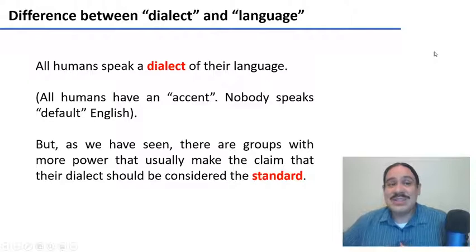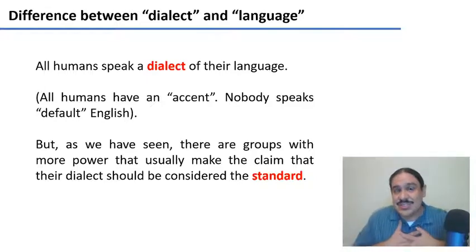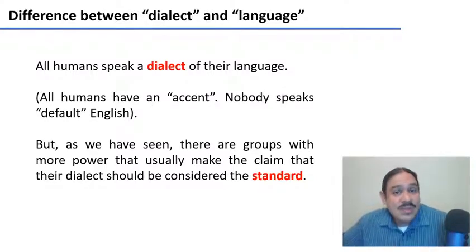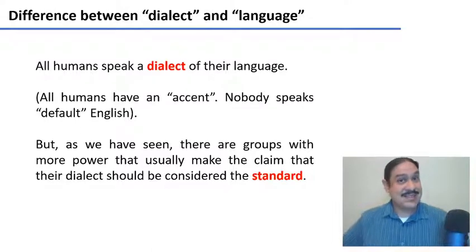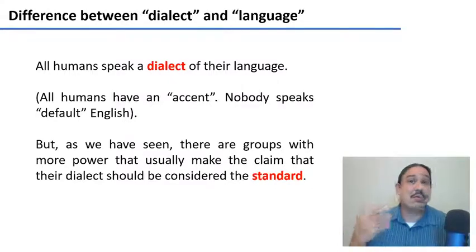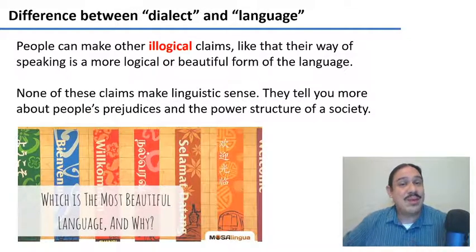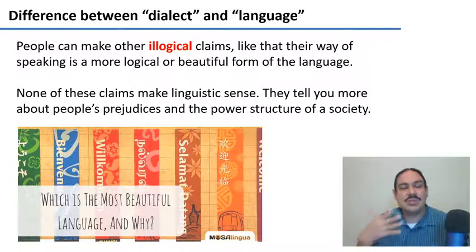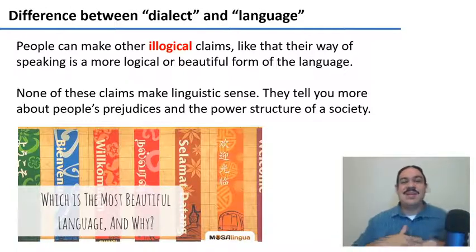It's a good moment to recap from week seven that all humans speak a dialect of their language — all humans have an accent. If you feel you don't have an accent, it's just because you're so used to it, but everyone speaks a dialect of English or whichever their native language is, and nobody speaks a default or standard English. As we saw in week seven, there might be a group in your society that claims their dialect is the standard one, but this claim is based on economic or political power, not on any linguistic or structural arguments.